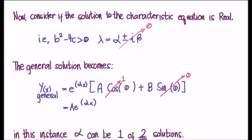Now, what happens if the characteristic equation has a real solution, or b squared minus 4c is greater than 0?